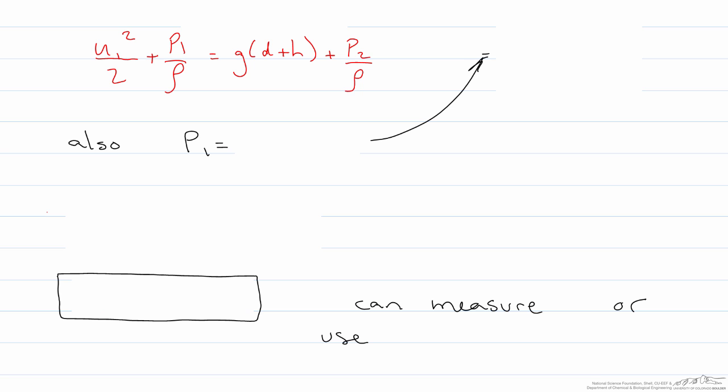We can simplify this equation a little bit by saying u1 squared over 2 plus p1 over rho is equal to g times d plus h, plugging in for z2, plus p2 over rho.